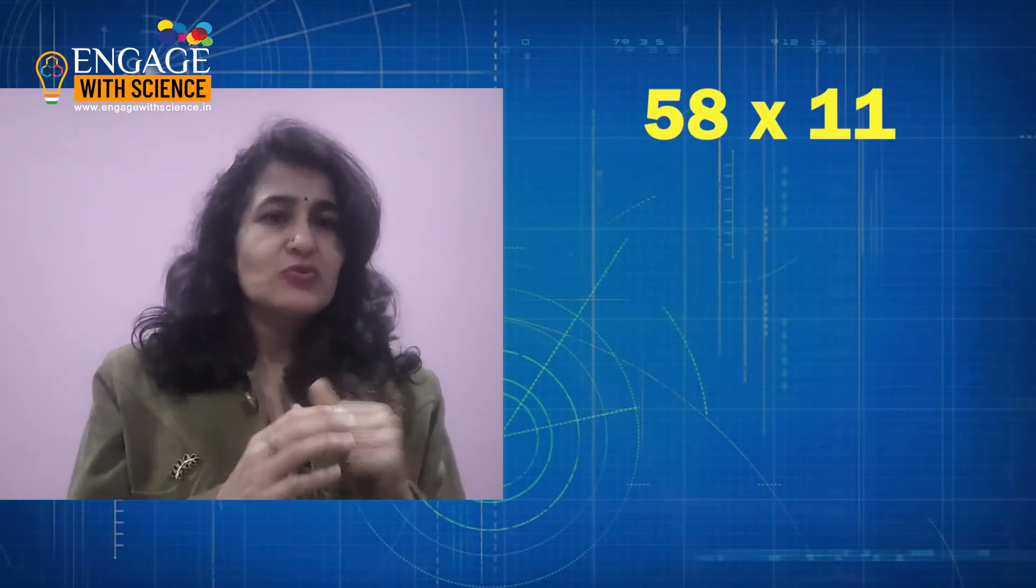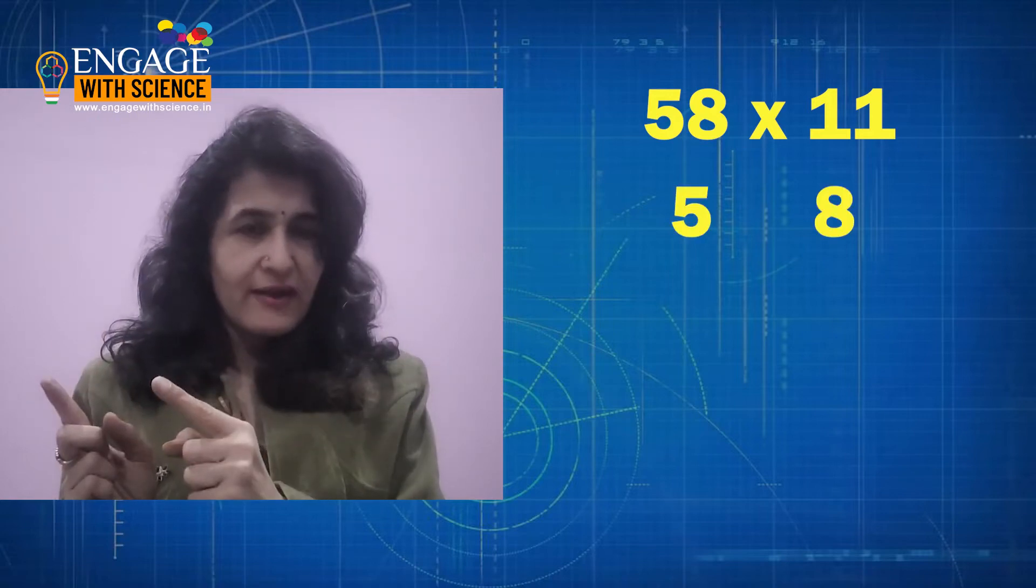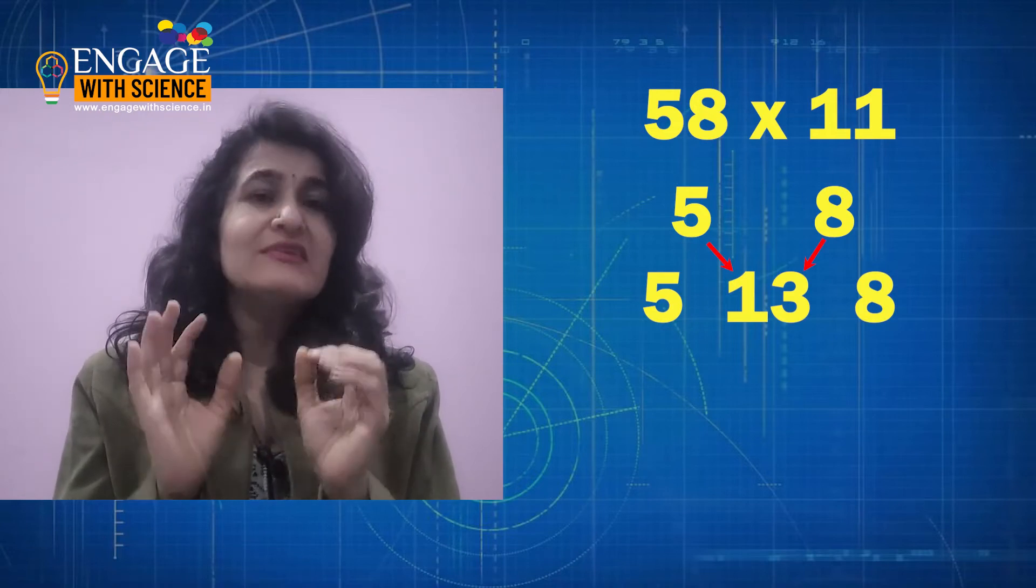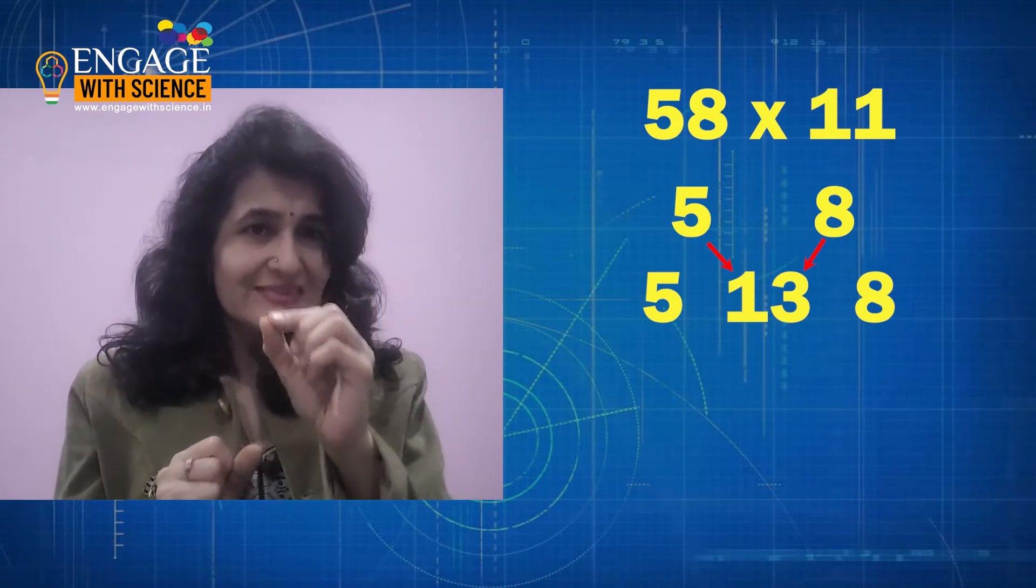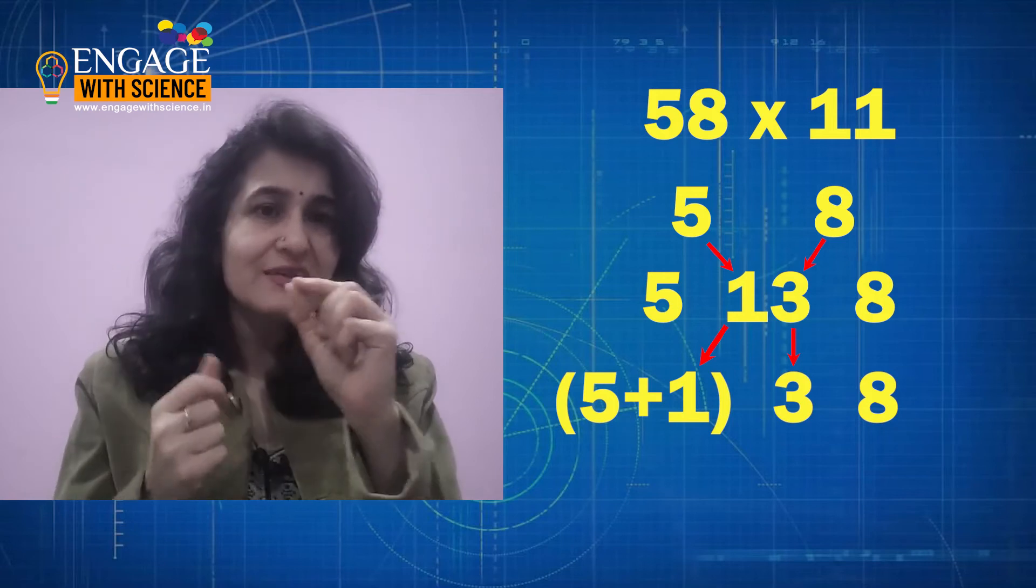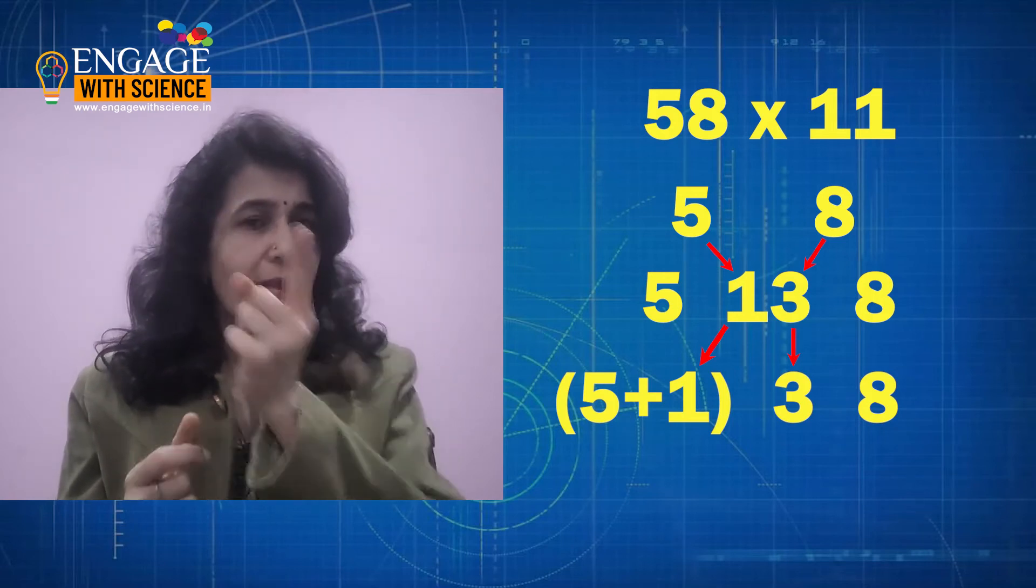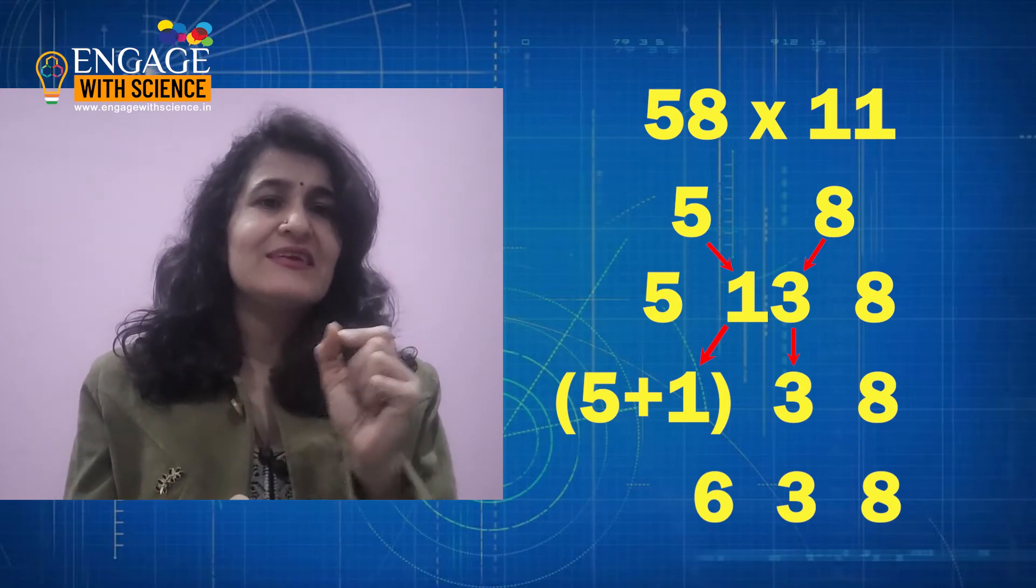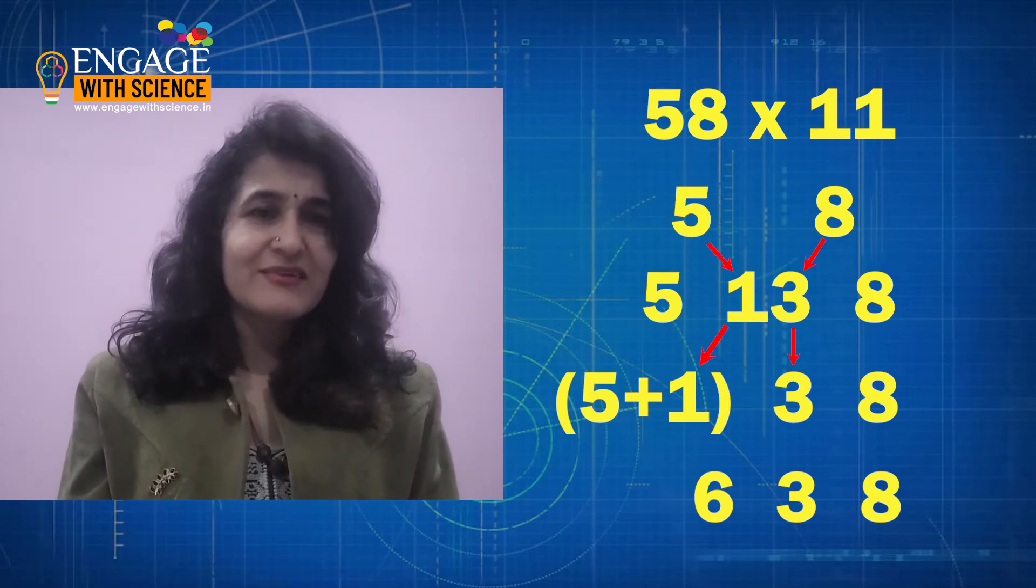Now let us take a big number, 58 into 11. You will write 5 and 8, now add 5 plus 8, it is a 2-digit number 13. So place 13, unit place 3 in between and 1 carry to hundreds place. So now the answer is 638. I hope you found the trick very helpful. Thank you.